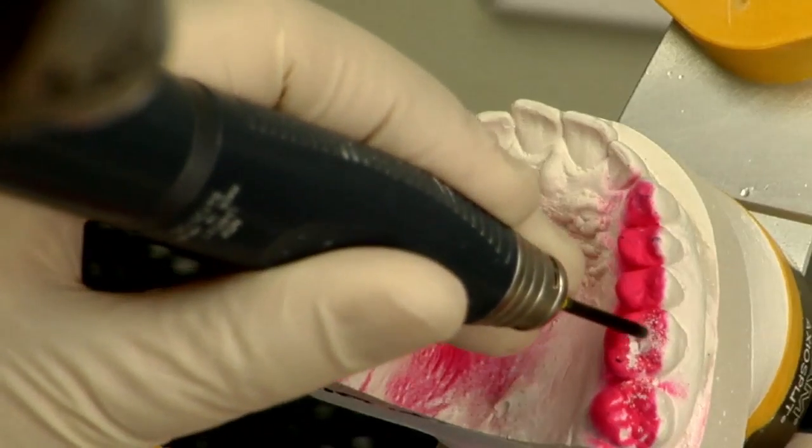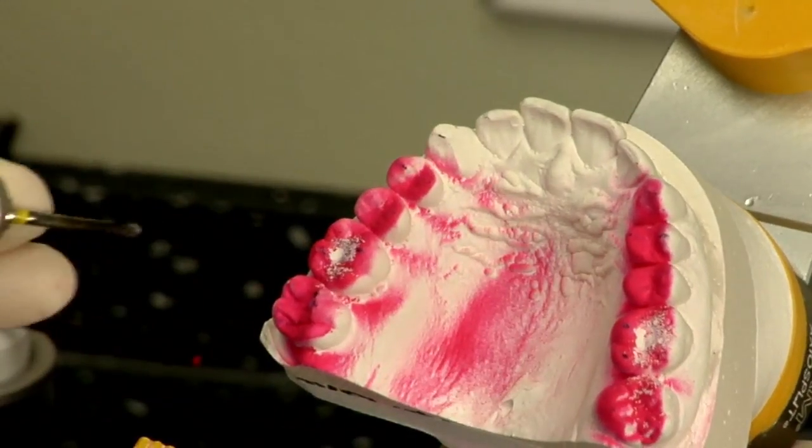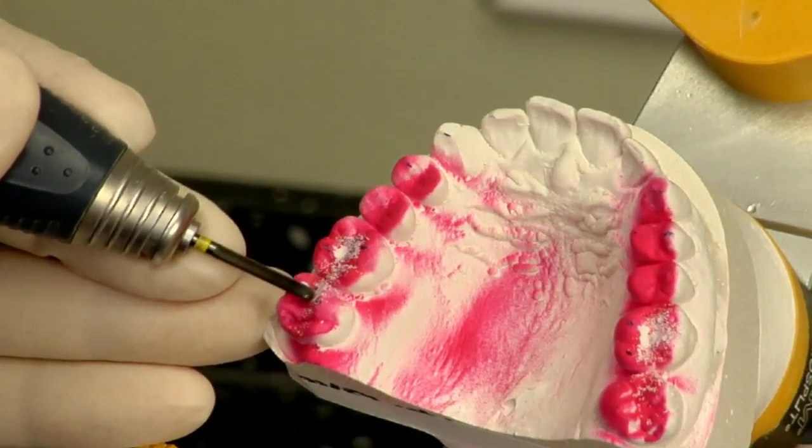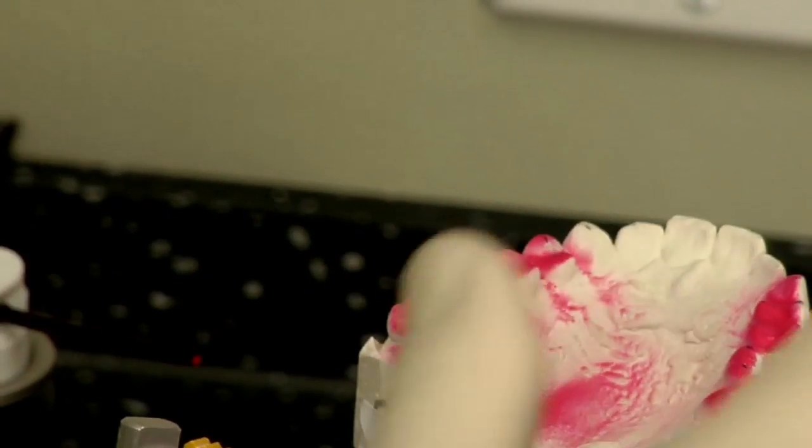The third DVD in the series is equilibration and we're going to walk you through trial equilibration, how to do that on a set of mounted study models. The whole series kind of flows because you need correct bite records to get to the stage where you're equilibrating the patient, and you need a correct mounting to get to the stage where you're able to equilibrate the patient. If you can do the correct bite records and the correct mounting, you can then do an accurate trial equilibration on the mounted models and then follow that up with actually equilibrating the patient in the mouth.